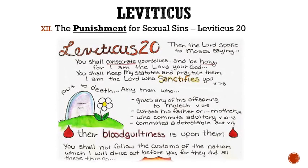Roman numeral 12: Leviticus 20 lists the punishment for sexual sins. An actual physical act of sex, whether it be adultery, homosexuality, bestiality, or the like, was punishable by death. However, just looking at a person's nakedness who was not your own was punishable by excommunication.